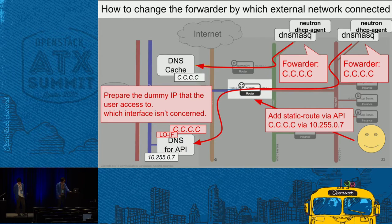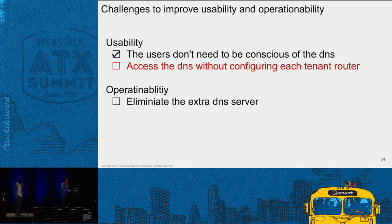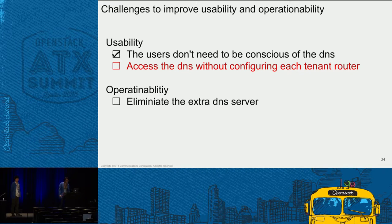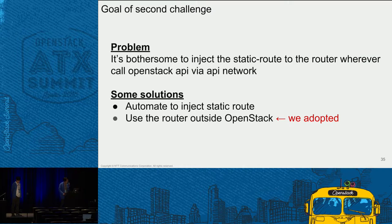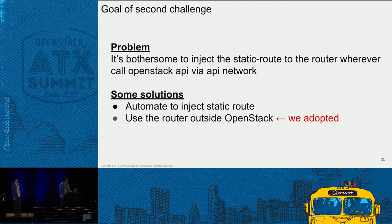The explanation for the first challenge is done. The previous challenge achieved that users don't need to be conscious of DNS. But in that solution, we need to inject the static route to each tenant router, which is a very heavy workload. So our next interest is: can we access the DNS dedicated to the API without configuring each tenant router? This problem is that we need to inject the static route to the tenant router whenever calling OpenStack API via the API network. If many tenants are involved, this workload is very heavy. So the goal of the second challenge is to become free from configuring each tenant router.